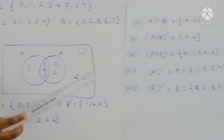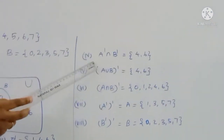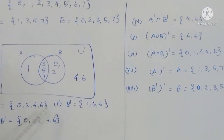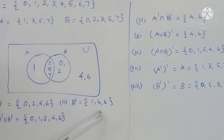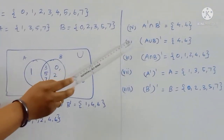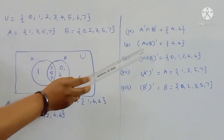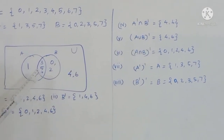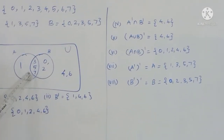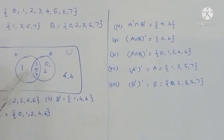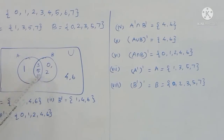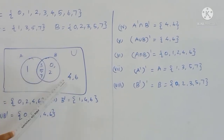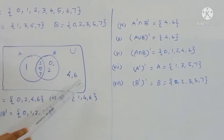A' intersection B' gives the common elements: {4, 6}. A' union B' whole dash corresponds to A intersection B, which has value {4, 6}.